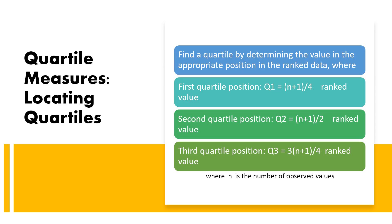To locate quartiles, find the value in the appropriate position in the ranked data. The formulas for quartile positions are: Q1 position = (n + 1) / 4; Q2 position = (n + 1) / 2; Q3 position = 3(n + 1) / 4, where n is the number of observed values.